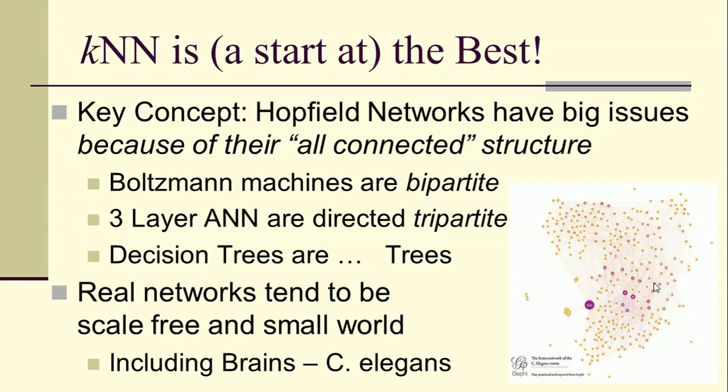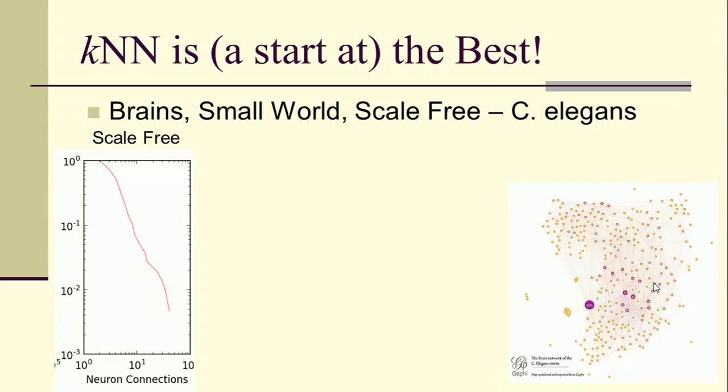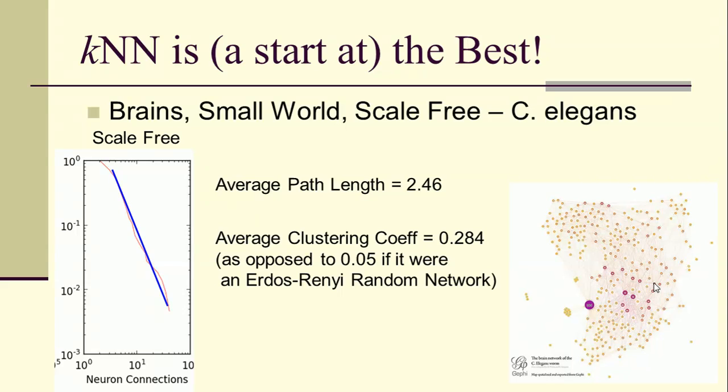Real networks tend to be scale-free in small world. So I've shown you here, this is actually the neural network of C. elegans, which is a type of a worm actually. Here is the degree distribution of the connectome for the graph of the neuron connections, and this is in a log-log scale, and we get approximately linear. So this is a power law distribution, scale-free. The average path length is 2.46. The average clustering coefficient is 0.284. Now if we were to create an Erdos-Renyi random network using these vertices, then it would have had a clustering coefficient of 0.05. So we have high clustering, low average path length, and we have hubs. So in this representation, the hubs have been drawn as larger vertices. I've pointed out a few of them here.